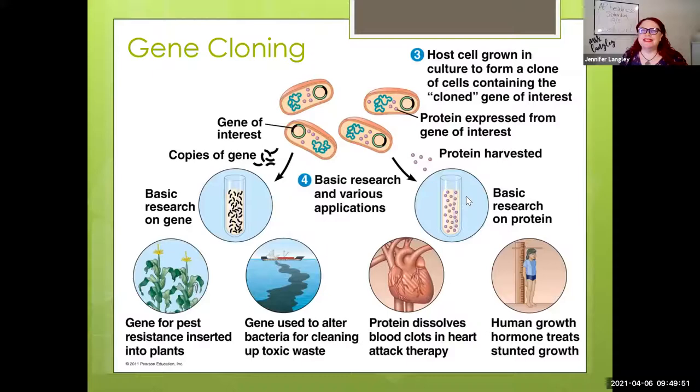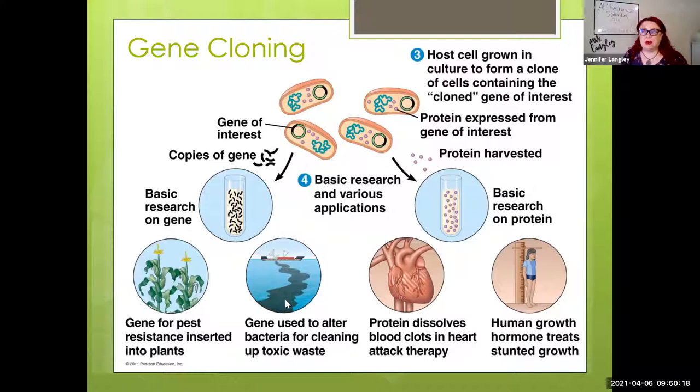We can produce growth hormones, insulin; we can make a protein or enzyme that dissolves clots in an artery to prevent heart attacks. We basically trick bacteria into making what we want. We've also used this to try to produce bacteria that will clean up toxic waste — so we're creating problems but also trying to fix them.